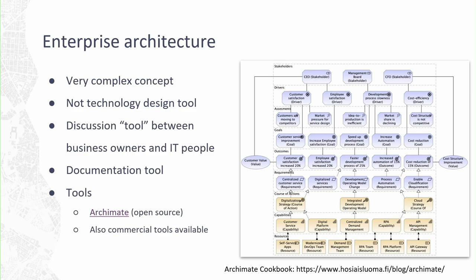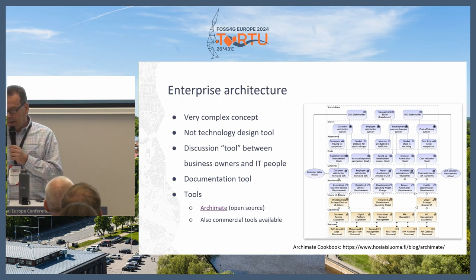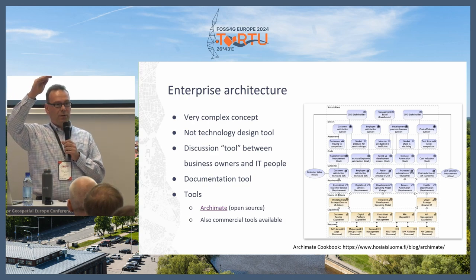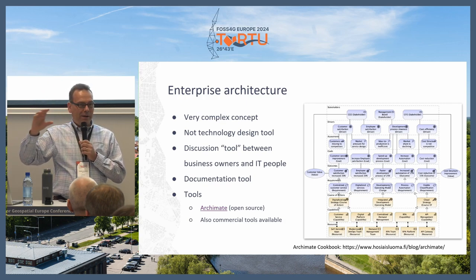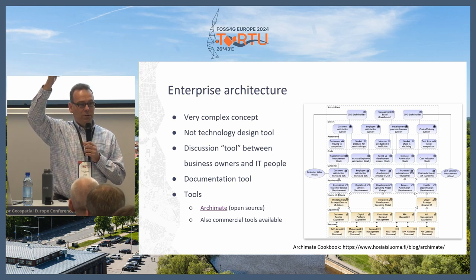Enterprise architecture is not a technology design tool — it's more like a communication and discussion tool between business owners and IT people. On the right side you see the CFO, the chief financial officer, who has drivers and goals to fulfill. Requirements flow from top to down in the organization. Usually we concentrate at the low level — building software, buying hardware — but managers don't understand what you need. You have to align with their drivers and goals.